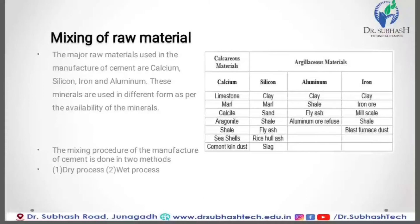In calcareous material, the main ingredient is calcium, obtained from limestone, marls, calcite, aragonite, shell, sea shell or cement kiln dust. The argillaceous material provides silicon, aluminium and iron. Silicon comes from clay, marl, sand, shell, fly ash, rice husk ash or slag. Aluminium comes from clay, shell, fly ash or aluminium refuse. Iron comes from clay, iron ore, mill scale, shell or blast furnace slag.